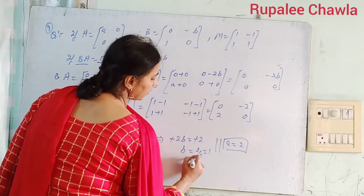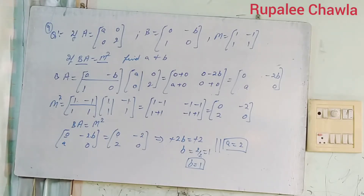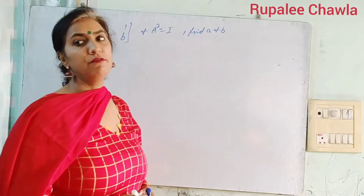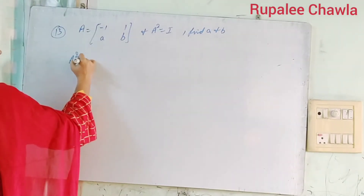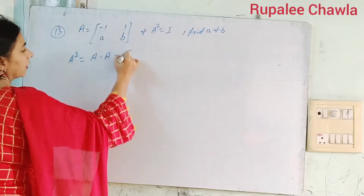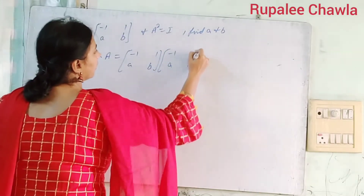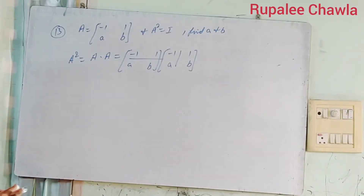So A की value 2 और B की value 1. Is that clear students? Multiplication थोड़ा सा ध्यान से करनी है. Next question: A दिया हुआ है minus 1, 1, A, B और A square equal to I — find A and B. अब पहले A square निकालेंगे। A square का मतलब है A into A — elements का square नहीं करना, multiplication का ही rule लगाना है। तो इसकी row को इसके column के साथ multiply करेंगे।